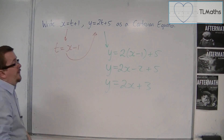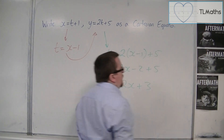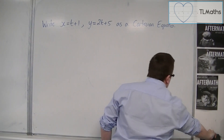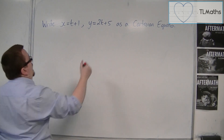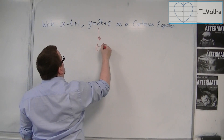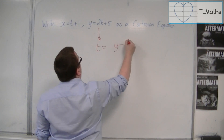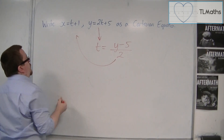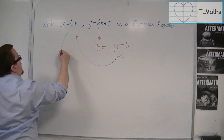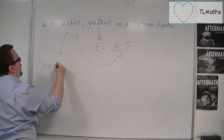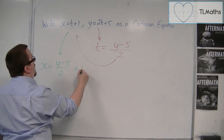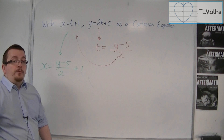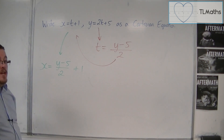That's the first possible way. The second way is to start with y = 2t + 5 and rearrange this to get t = (y − 5) / 2. Then you substitute that into the x equation to get x = (y − 5)/2 + 1. Now it certainly doesn't look as nice as the other one, but we could rearrange it to get back to that other form.